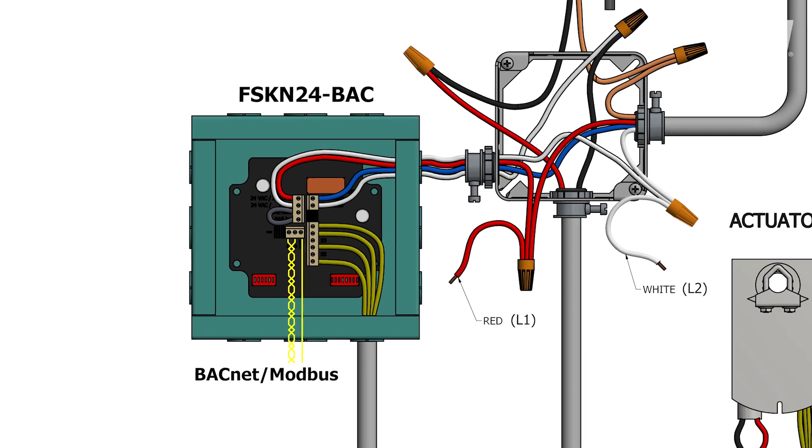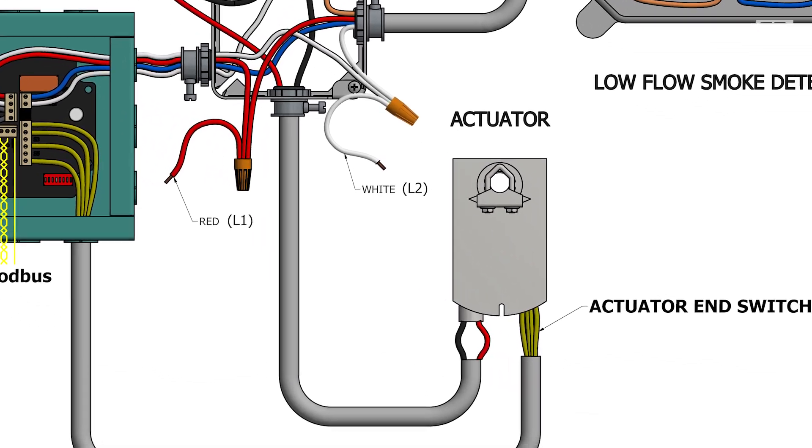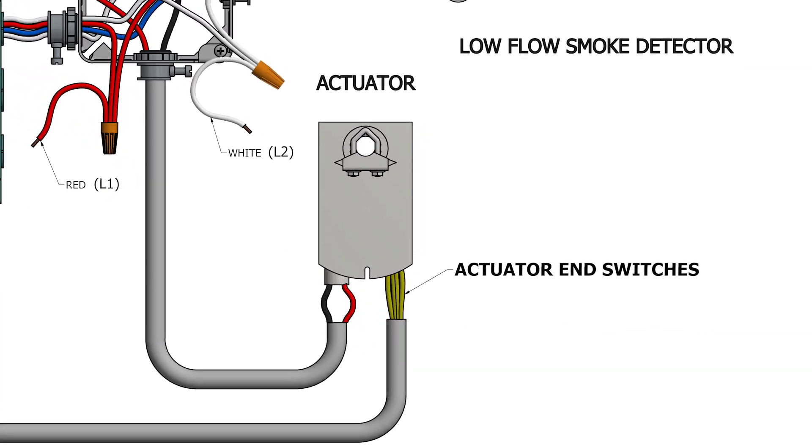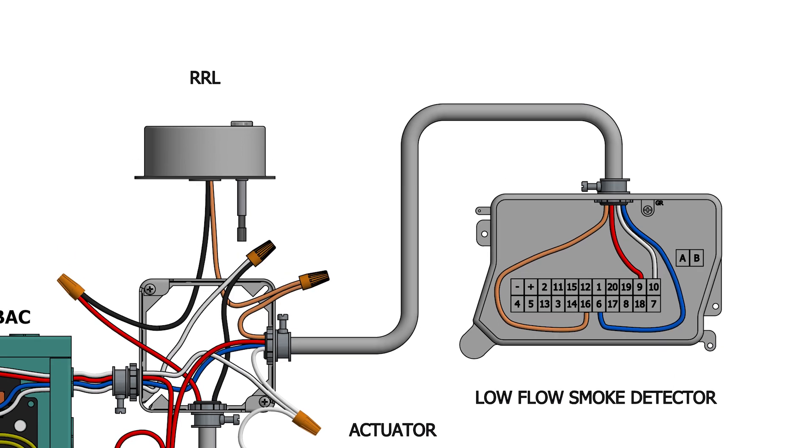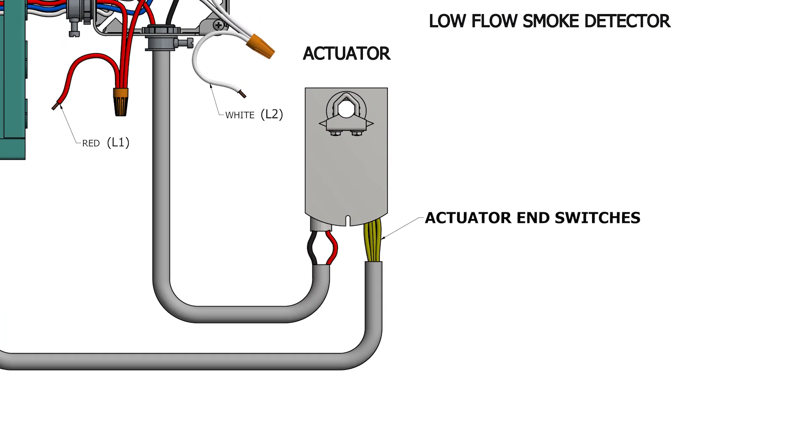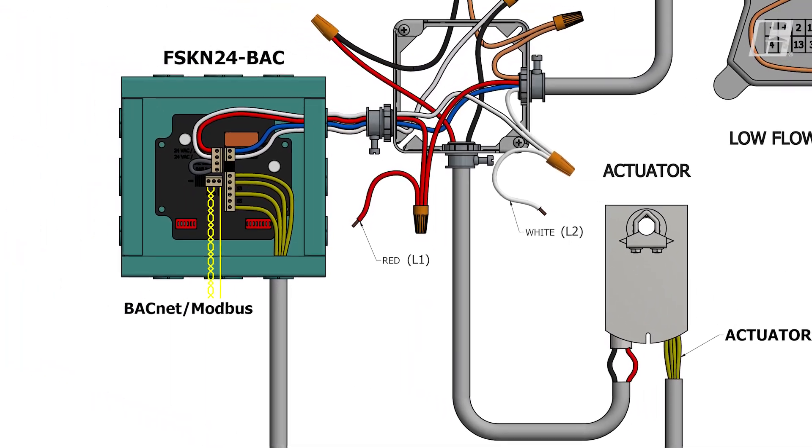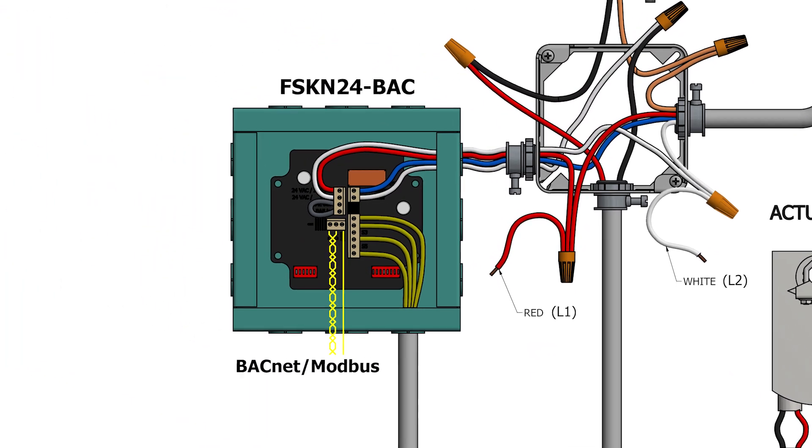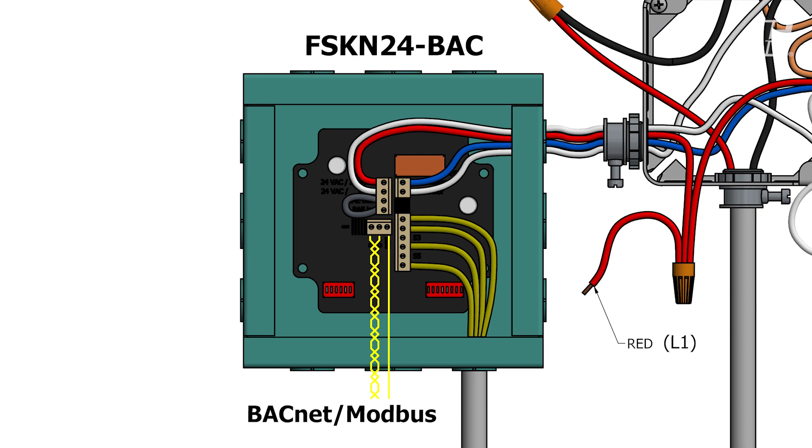Power is applied through the FSKN and wired in series with the damper actuator as well as the heat response device and smoke detector depending on the type of damper. Damper position indication switches are wired back to the FSKN for monitoring. BACnet or Modbus connections are also made to the FSKN for communication with the building automation system.